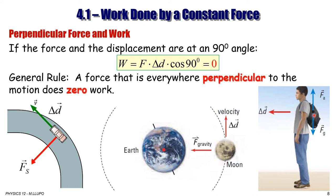A common example: if you carry a backpack all day, it feels like a lot of work, but in physics terms you do zero work. Why? Because your displacement is moving forward, and the force you apply carrying it — against gravity — is at 90 degrees to that displacement. So using the formula, the applied force times displacement gives zero work, and the force of gravity, which is also perpendicular to displacement, does zero work on your backpack.